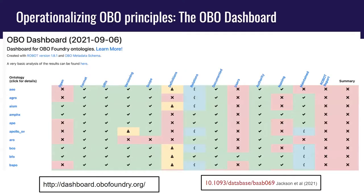Just recently we published a paper in Database updating everyone on the latest status of OBO. One outcome was this idea of operationalising all of the OBO principles. Historically, a lot of these principles were a little fuzzy — similar to how some notions in FAIR are fuzzy — but we made them actionable. We implemented a dashboard so we can evaluate all OBO ontologies against each principle: openness, file format, URIs, and so on. There are now a lot more green ticks across these ontologies.